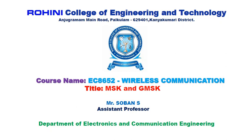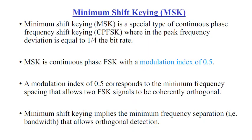Today we discuss Minimum Shift Keying (MSK) and Gaussian Minimum Shift Keying. MSK is a special type of continuous phase frequency shift keying where the peak frequency deviation is equal to 1/4th the bit rate. MSK is continuous phase FSK with a modulation index of 0.5, which corresponds to the minimum frequency spacing that allows the FSK signal to be coherently orthogonal.